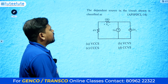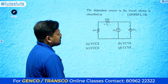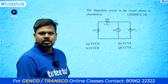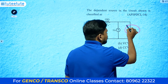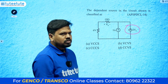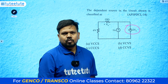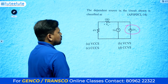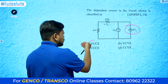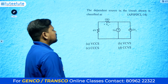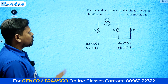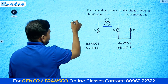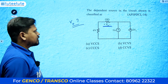The next question asks to classify the dependent source in the circuit shown. The options are: voltage-controlled current source, voltage-controlled voltage source, current-controlled current source, current-controlled voltage source. The source has a current direction arrow — so it is a current source. It depends upon a voltage — so it is a voltage-controlled current source (VCCS).